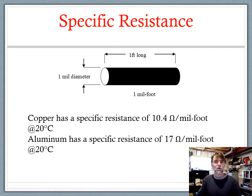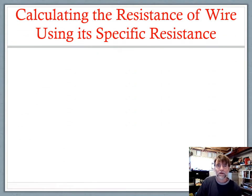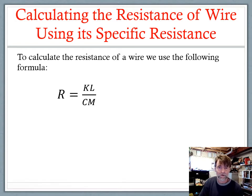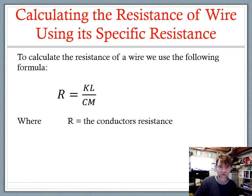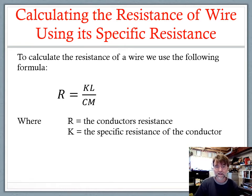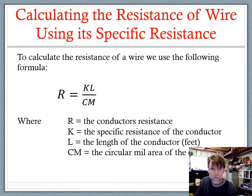Now we can actually calculate the resistance of any given conductor. In order to do that we need an equation. The formula is R equals KL over CM. R is the resistance of the conductor — that's what we're trying to calculate. K is the specific resistance of the conductor: 10.4 for copper or 17 ohms for aluminum. L is the length of the conductor in feet — it's all imperial, no metric. CM is the circular mil area.